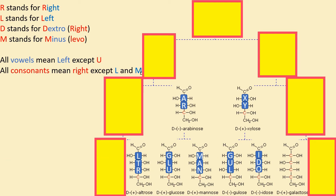For idose, the first three letters are I, D, O. Both I and O are vowels, so hydroxyl groups on both those carbons are on the left side, while D means dextro so the hydroxyl group there is on the right side. For galactose, the first three letters are G, A, L. G is a consonant — OH on the right. A is a vowel and L means left — so hydroxyl groups on those two carbons are on the left side. Remember altrose is exceptional: we skip the first letter A and start from L.